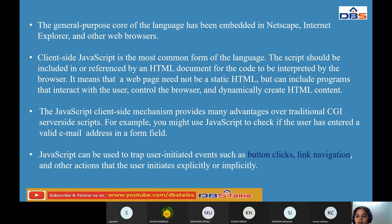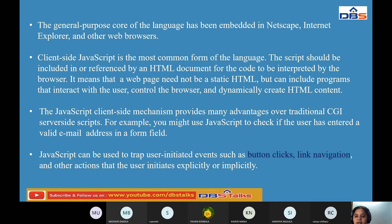The JavaScript client-side mechanism provides many advantages over traditional CGI server-side scripts. For example, you might use JavaScript to check if the user has entered a valid email address in a form field. JavaScript can also be used to trap user-initiated events such as button clicks, link navigations, and other actions that the user initiates explicitly or implicitly.